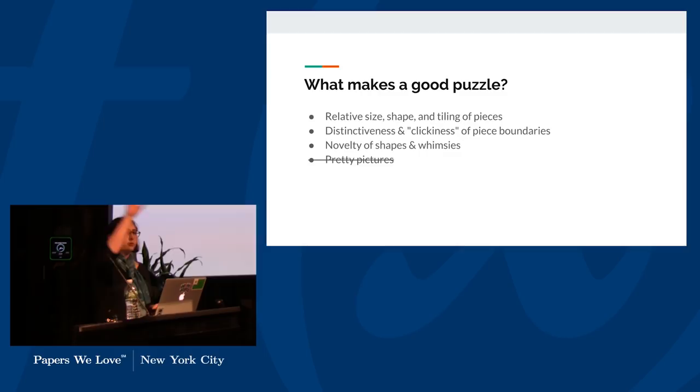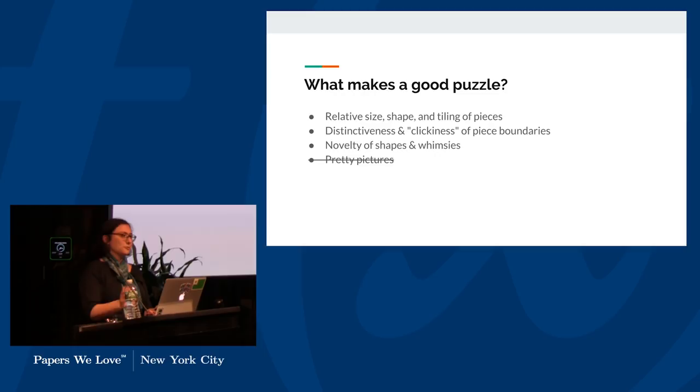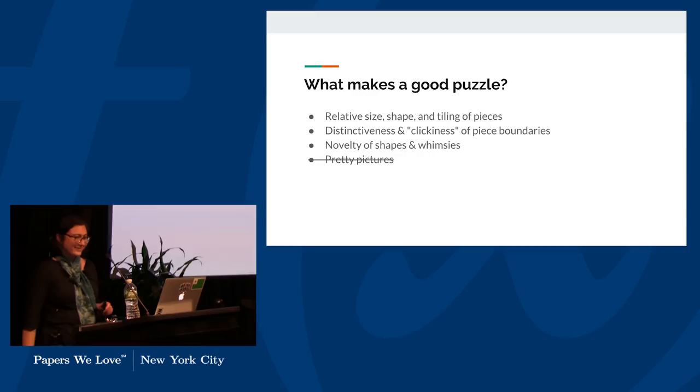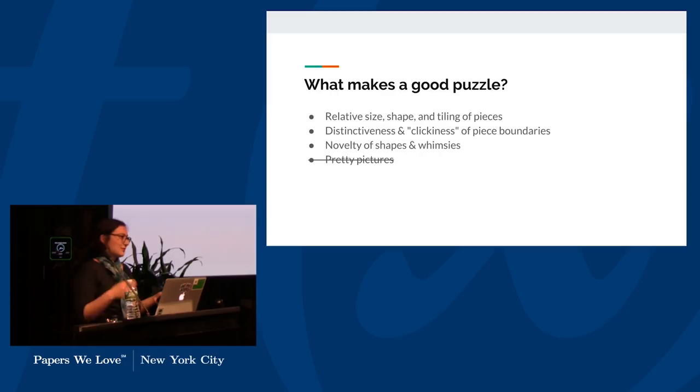The distinctiveness of the piece boundaries matters a lot when you're trying to figure out which piece you need. And you want the clickiness to be really good so that your puzzle's not difficult for silly reasons like a mechanical flaw. You should be able to tell when you put a puzzle piece together correctly. The meat of this paper talks about piece boundary generation.